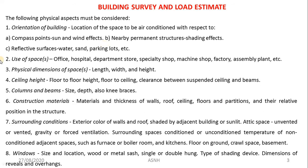Surrounding conditions are also most important and are available from Carrier charts and ISHRAE/ASHRAE standard guideline books. Surrounding conditions include the exterior color of the wall and roof, whether shaded by adjacent buildings or in sunlight, attic space conditions (unvented and vented cavities), and gravity or forced ventilation. We must consider surrounding conditions in order to avoid losses.